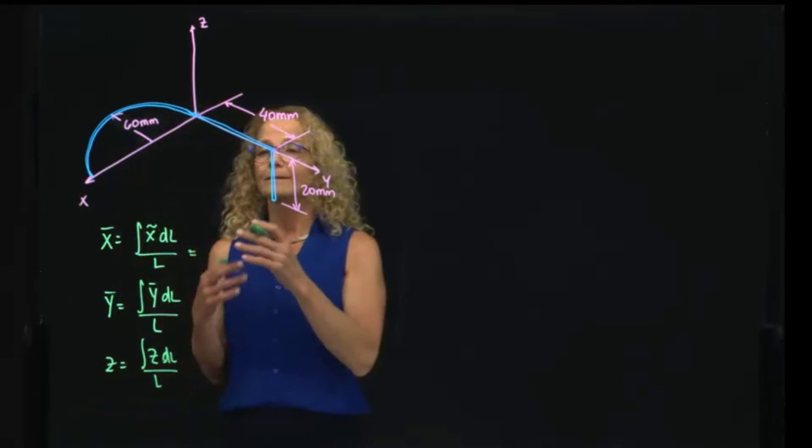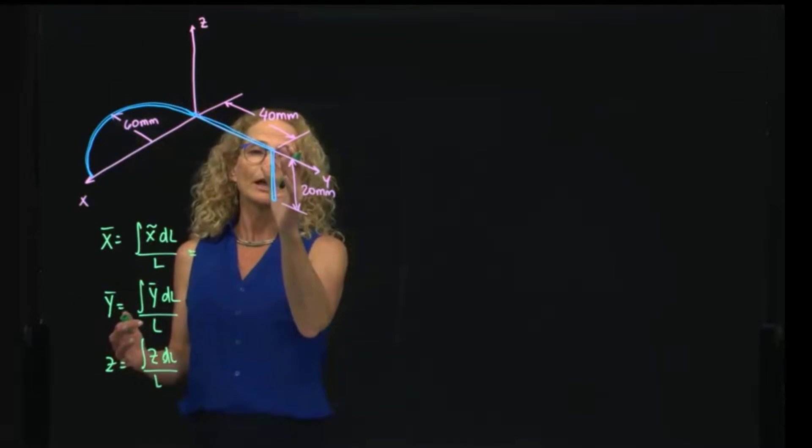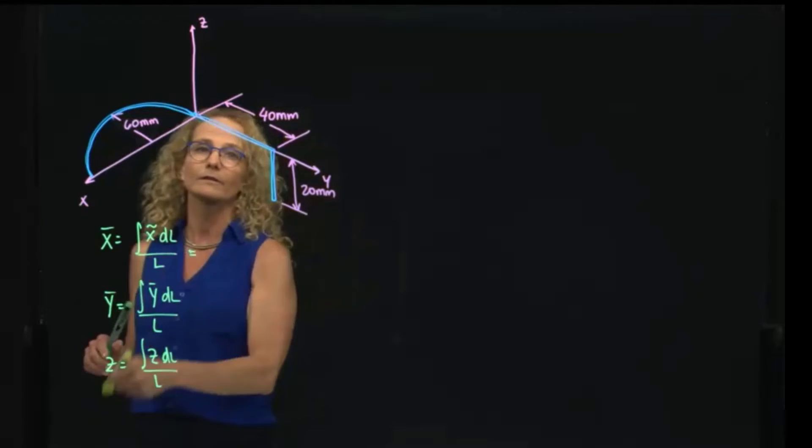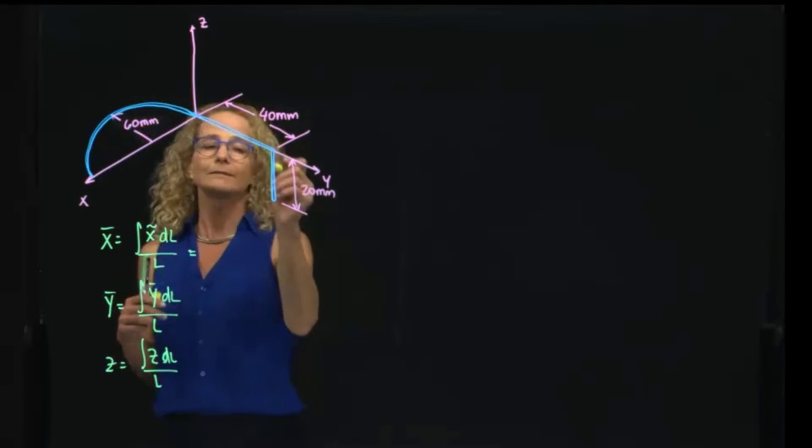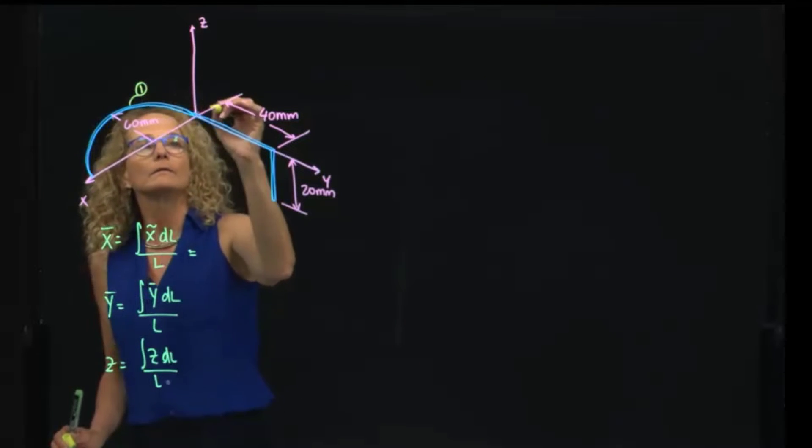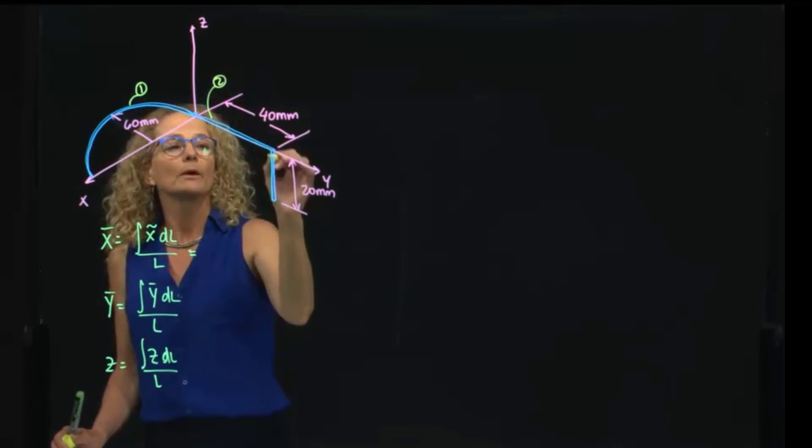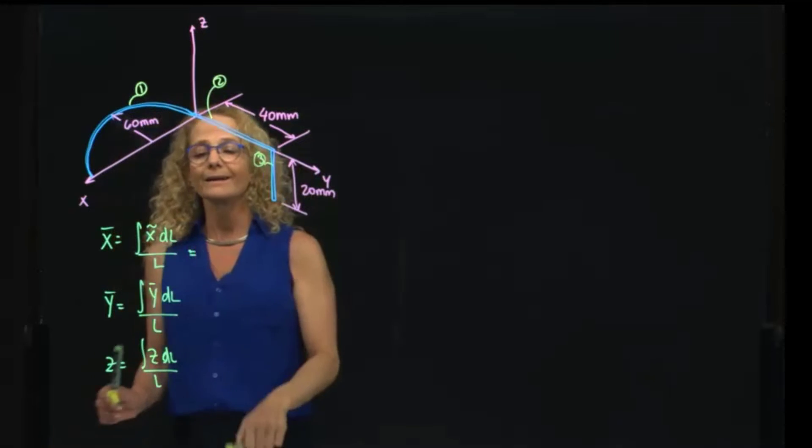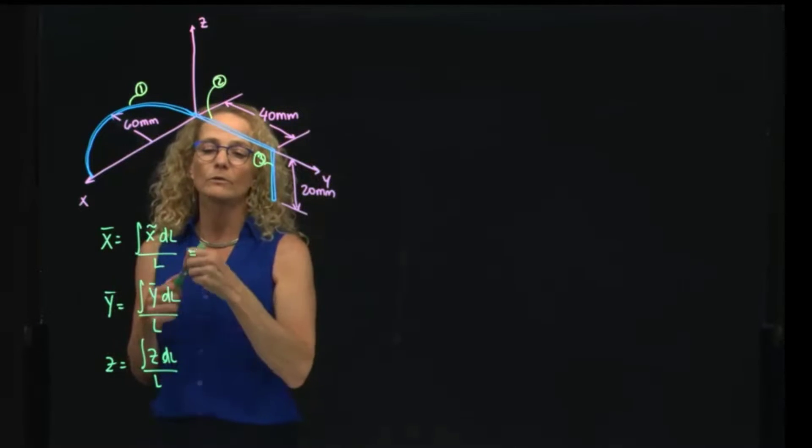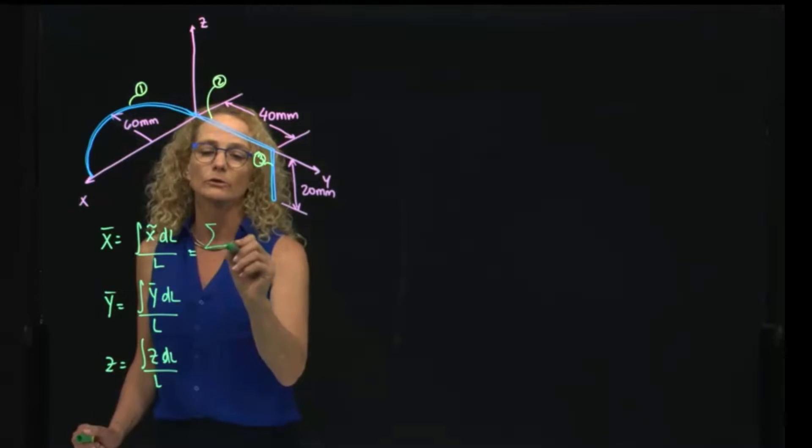Since all of these shapes, we know where the centroid is located. For example, if we divide this shape in three parts, where this is part one, this is part two, and this is part three, we can decompose that integral in three parts and convert it to a summation.